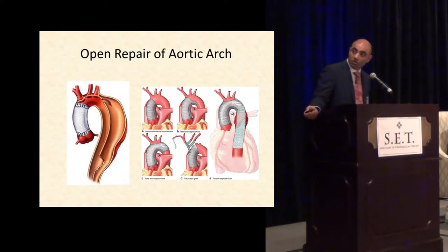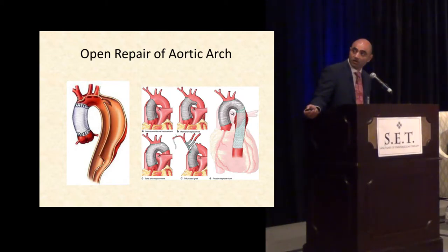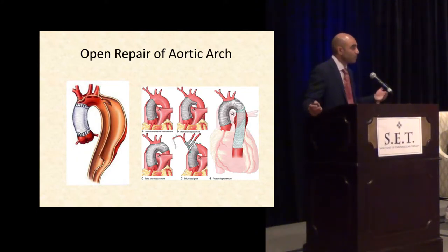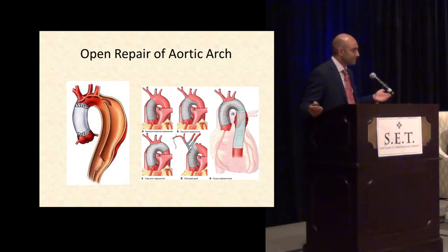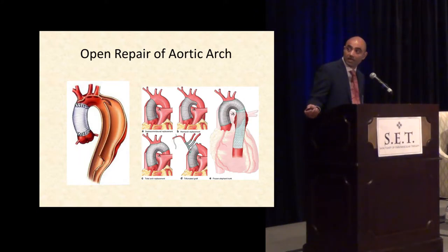Unless you do a total arch of some variety, or a total arch with a frozen elephant trunk, the descending aorta and more importantly the arch is still dissected and can become aneurysmal and have persistent flow. That's the problem that all of us are going to have to deal with, as these patients are living longer and doing better after their open repair of type A dissections. They're presenting years later — now they're older, they're sicker — and they have a problem dealing with perfusion to the brain that we don't really have a great solution for.